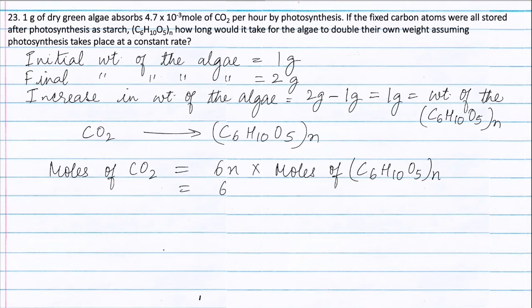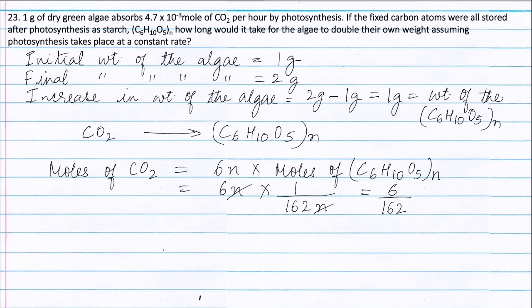This gives 6N into moles of starch, which equals weight of starch (1 gram) divided by molecular weight of starch (162N). N and N get cancelled, giving 6 divided by 162 moles. Therefore, moles of carbon dioxide absorbed is 6 divided by 162 moles.